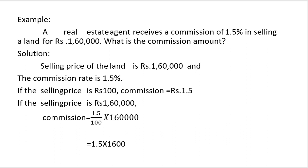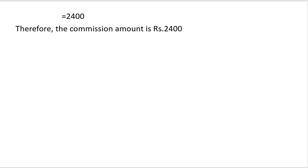Commission equals 1.5 divided by 100, multiplied by 1,60,000. Cancelling the values: 1.5 multiplied by 1,600 gives 2,400 rupees. So the commission or brokerage fee the agent receives is 2,400 rupees.